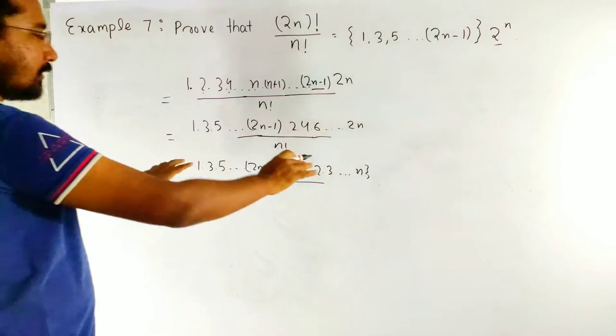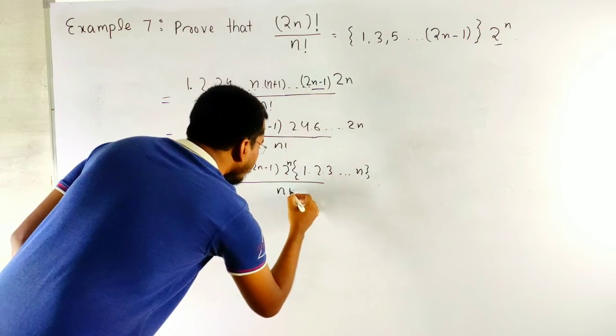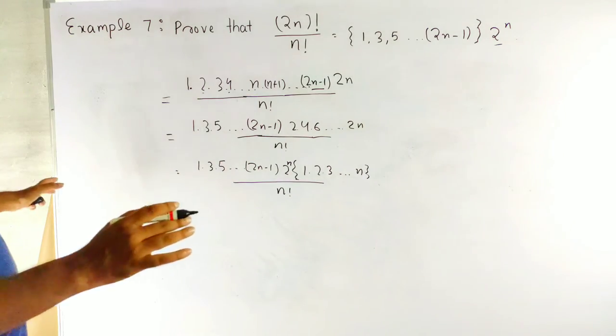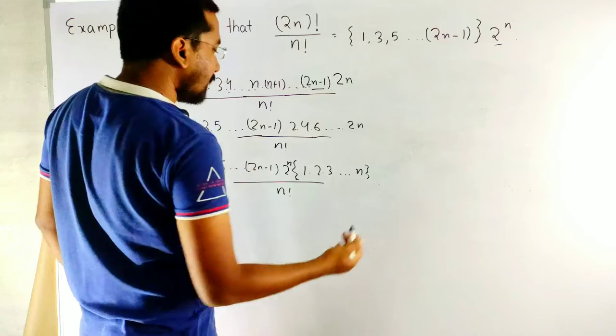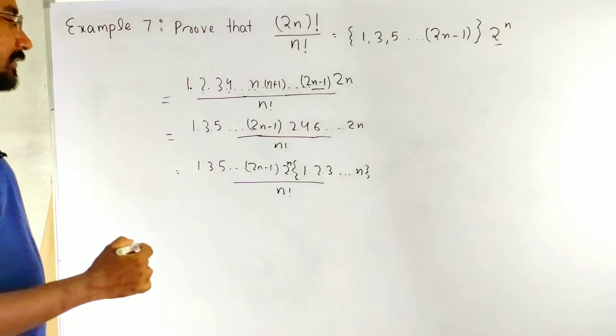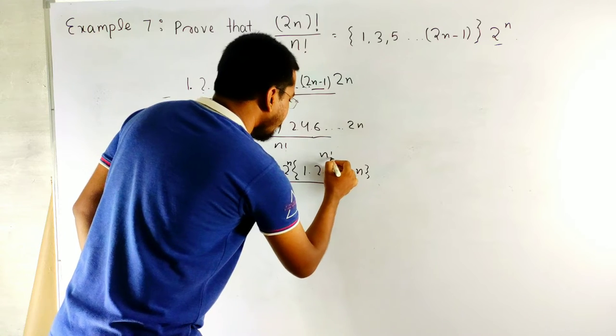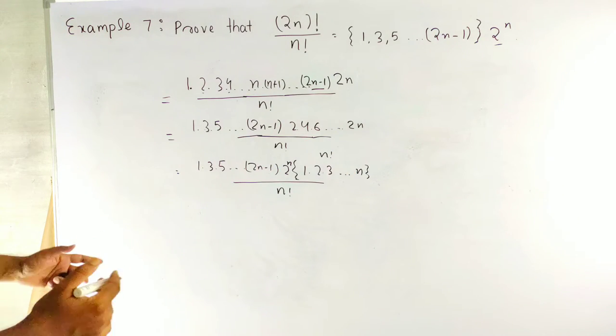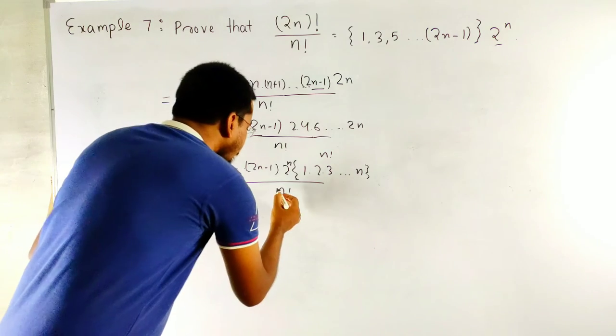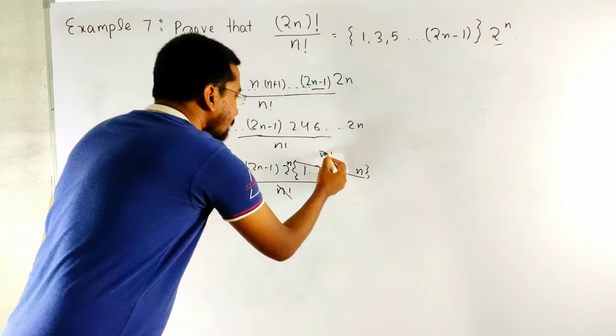Now, as all are multiplication, can I cut down? Yes. 1, 2, 3, up to n means what is? This is n factorial. This whole term is n factorial. Can I cut it down? Yeah. n factorial by this. This is n factorial.